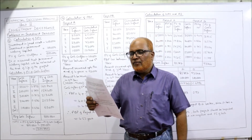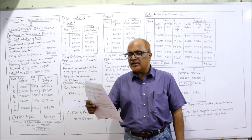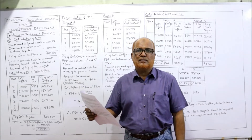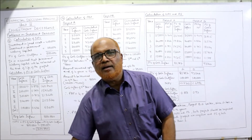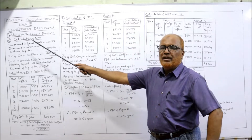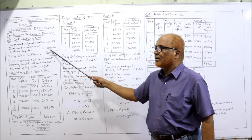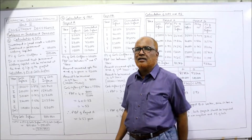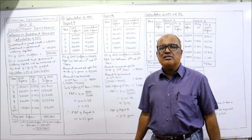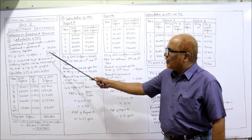Project cash inflows are: year 1 - 1 lakh 80 thousand, year 2 - 2 lakh, year 3 - 3 lakh, year 4 - 3 lakh 20 thousand. Rate of discounting is 12%. You have to calculate the NPV. The formula for NPV is PV of cash inflow minus PV of cash outflow. PV of cash outflow is 5 lakh.